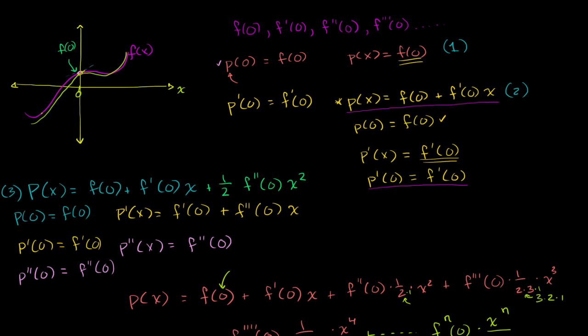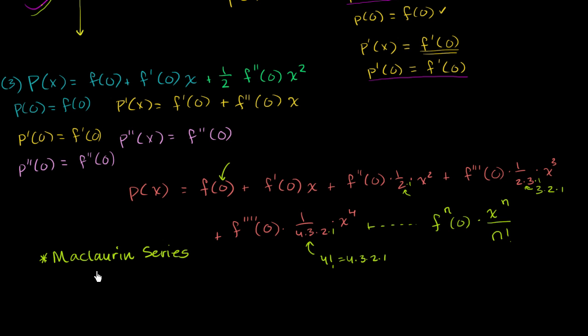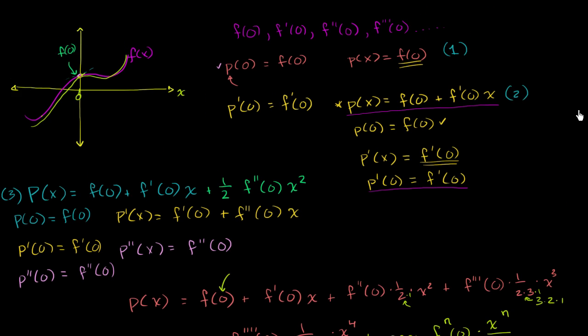In the last video, we hopefully set up some of the intuition for what a Maclaurin series is all about. A Maclaurin series is just a special case of a Taylor series. In the case of a Maclaurin series, we're approximating the function around x is equal to 0. In a Taylor series, you can pick an arbitrary x value around which to approximate the function. But with that said, let's just focus on the Maclaurin, because to some degree it's a little bit simpler, and that by itself can lead us to some pretty profound conclusions about mathematics.